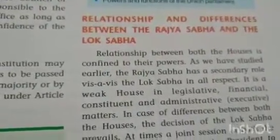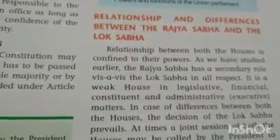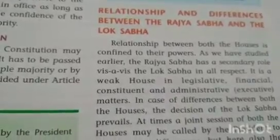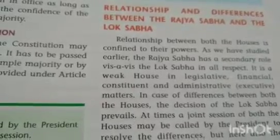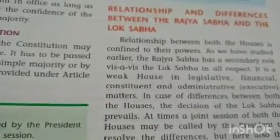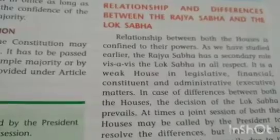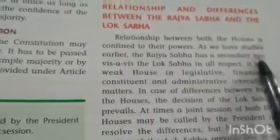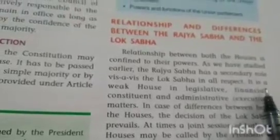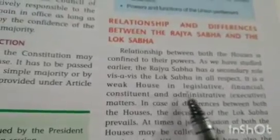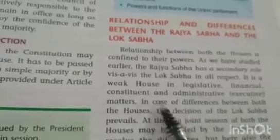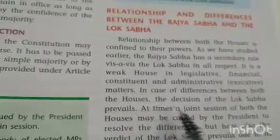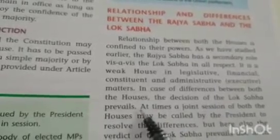Relationship and differences between the two houses — Lok Sabha and Rajya Sabha. The relationship is confined to their powers. Comparing the powers of both houses, Lok Sabha is more powerful than Rajya Sabha. That is why Rajya Sabha has a secondary role. Rajya Sabha is the weaker house in legislative, financial, constituent, administrative, and executive matters. In case of differences between both houses, the decision of Lok Sabha prevails.